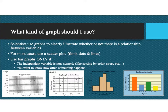After you organize your data well, then you need to figure out what kind of graph to choose. Scientists use graphs to clearly illustrate whether or not there's a relationship between the variables. We saw in the mass and volume example that there was a clear relationship — as volume increases, mass increases. So what's the best way to illustrate this? What kind of graph should we use?